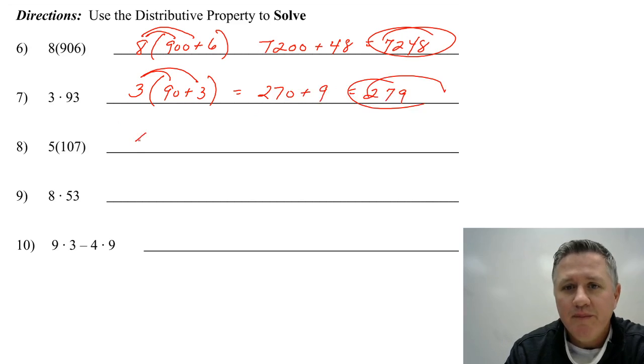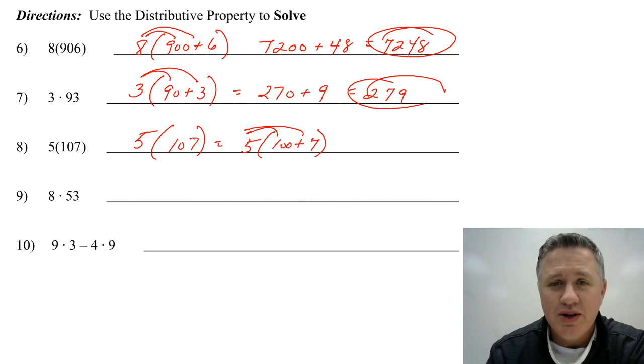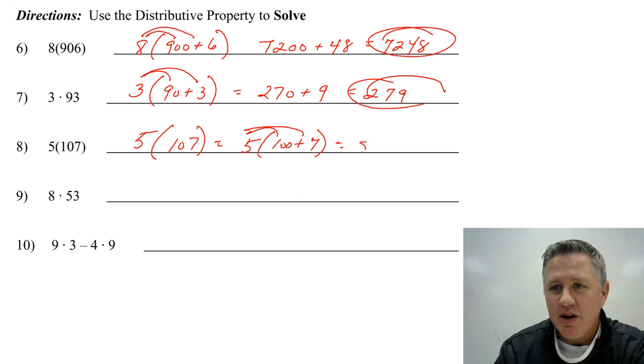Next one. 5 times 107. Well, the two easier problems would be 5 times 100 plus 7. I don't know why I rewrote the question there, but I did. 5 times 100 is 500. And 5 times 7 is 35. So you wind up getting 535.